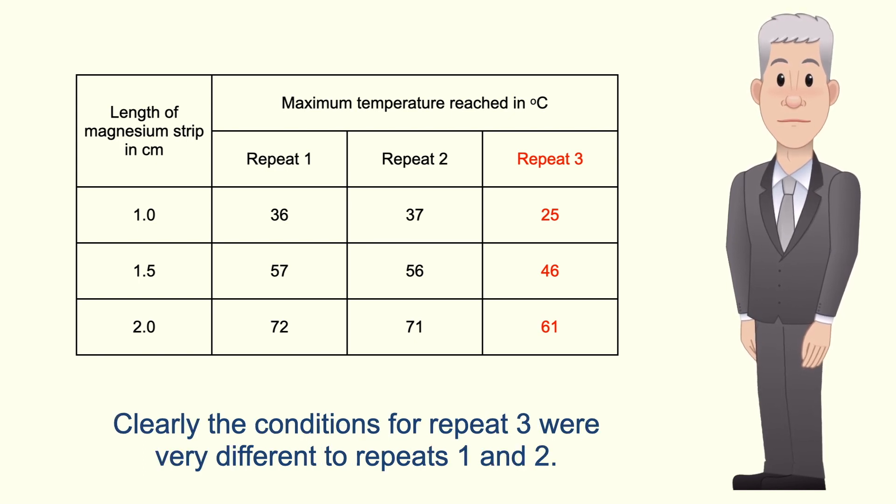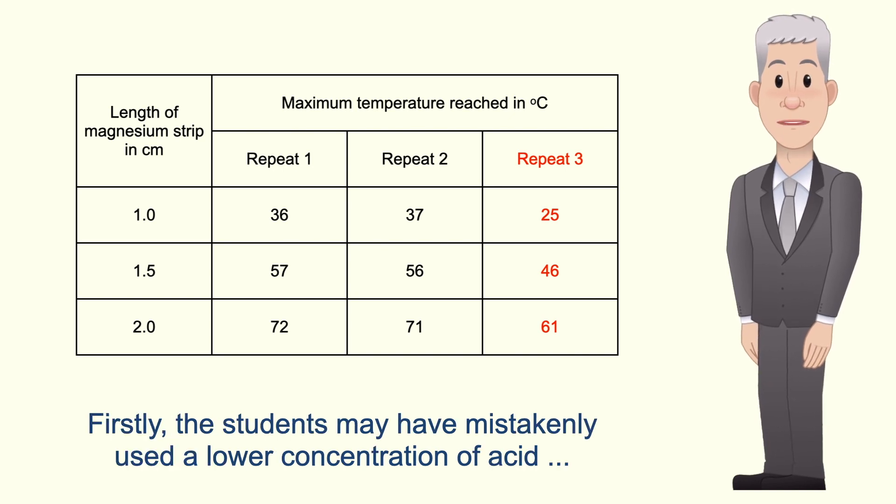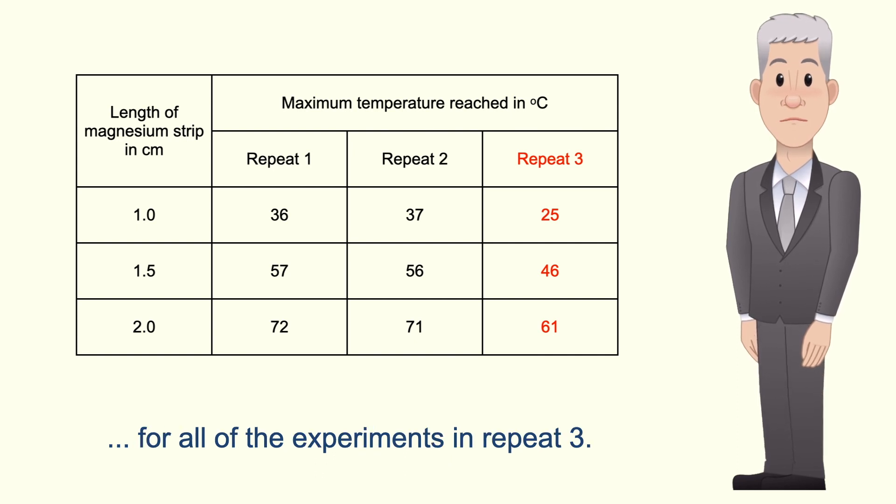Clearly the conditions for repeat 3 were very different to repeats 1 and 2. So what could have caused this systematic error? Well, firstly the students may have mistakenly used a lower concentration of acid for all of the experiments in repeat 3. A lower concentration of acid would explain why the maximum temperature reached in repeat 3 was less than in repeats 1 and 2.